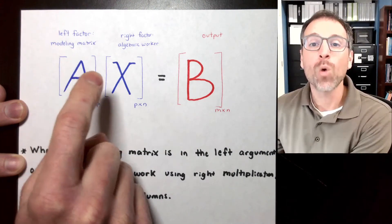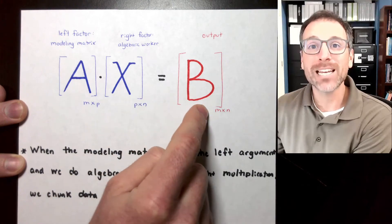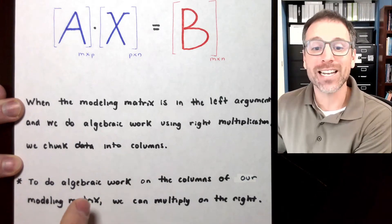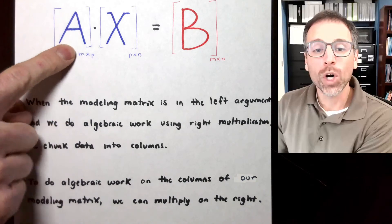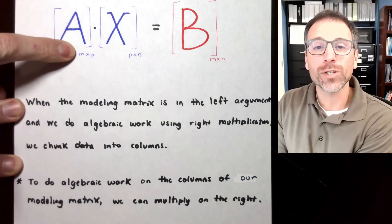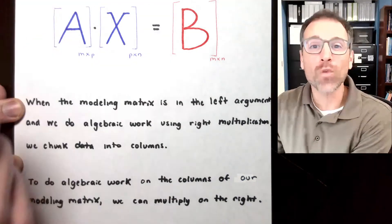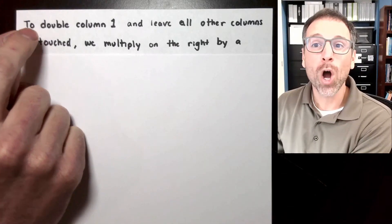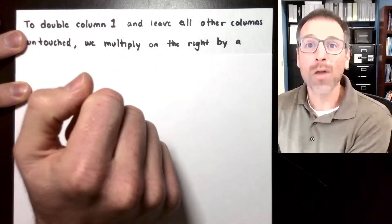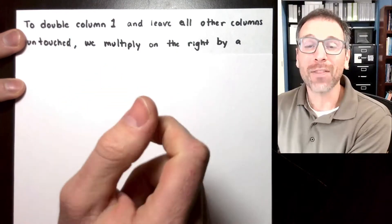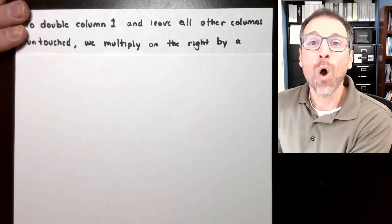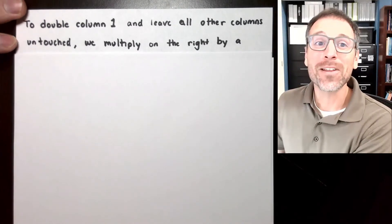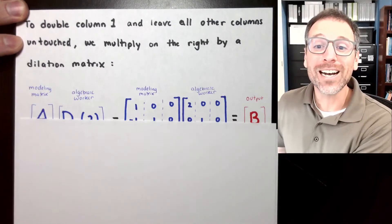We cut A into columns, we cut X into columns, and we cut B into columns. We can reframe that statement and say: to do algebraic work on the columns of our modeling matrix, let's multiply that on the right by an algebraic worker. Remember that in this example we want to double column 1 and leave all other columns untouched. The question we might ask ourselves is: what type of matrix would allow us to do that?